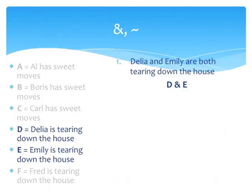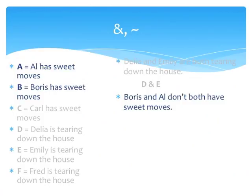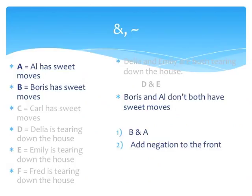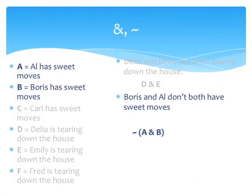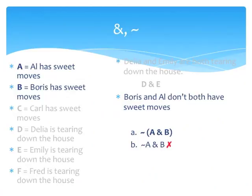Now for the second one. The atomic sentences involved are B and A. 'Boris and Al don't both have sweet moves' is simply the negation of the sentence 'Boris and Al both have sweet moves.' Our translation procedure is the following: first, form the conjunction 'Boris has sweet moves and Al has sweet moves.' Second, add a negation sign in front. Since we are negating the whole conjunction and not only a part of it, we have to make the negation apply to the whole sentence. We do this by enclosing the conjunction in parentheses and then adding the tilde to the left. The parentheses are absolutely necessary; otherwise we would end up with a sentence like tilde-A-ampersand-B, which means something different — namely that Al doesn't have sweet moves but Boris does — because the negation sign only applies to the smaller sentence that follows it.